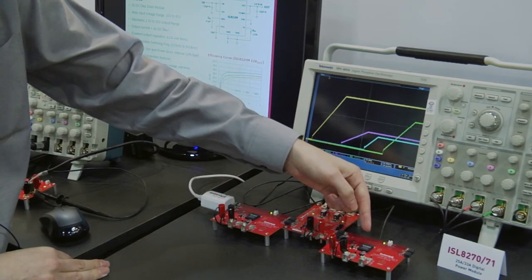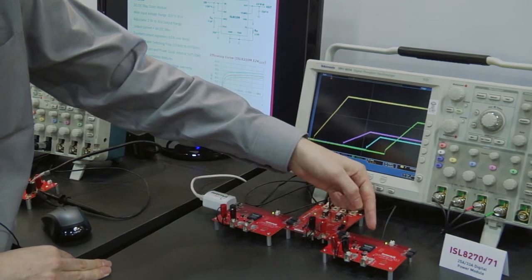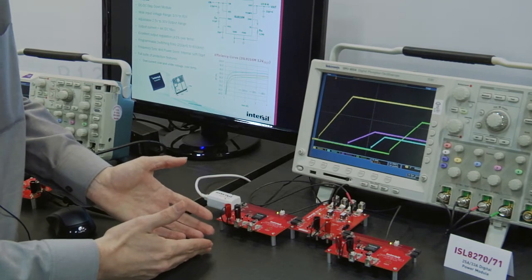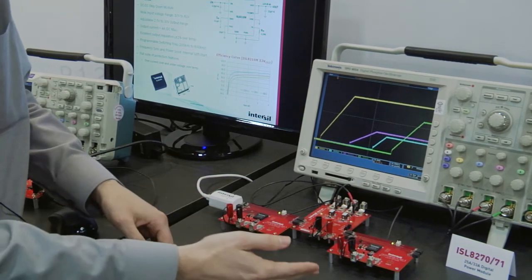And on the far right is the ISL8271. This device is a 33 amp module, similar to the ISL8270, pin compatible, just a higher current rating.